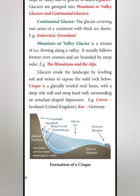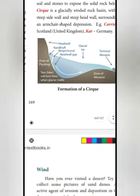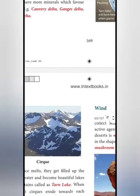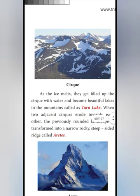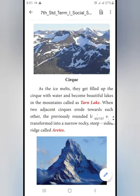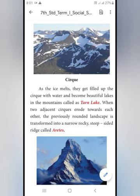Corrie is found in Scotland, United Kingdom. Car is found in Germany. Next, as the ice melts, they get filled up the cirque — cirque means Vattam — with water and become beautiful lakes in the mountains, called Tarn Lakes.